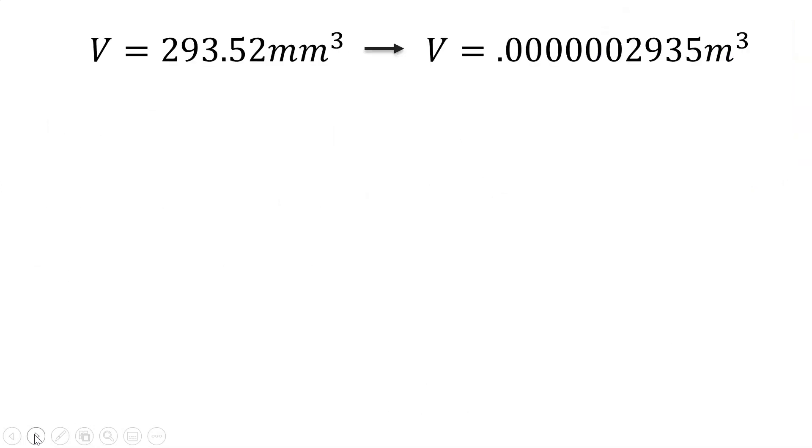When we compare the volumes we can see that since the measurements change by dividing by a thousand and it takes three measurements or dimensions to find the volume, to get the new volume we need to divide by 1000 to the third power.